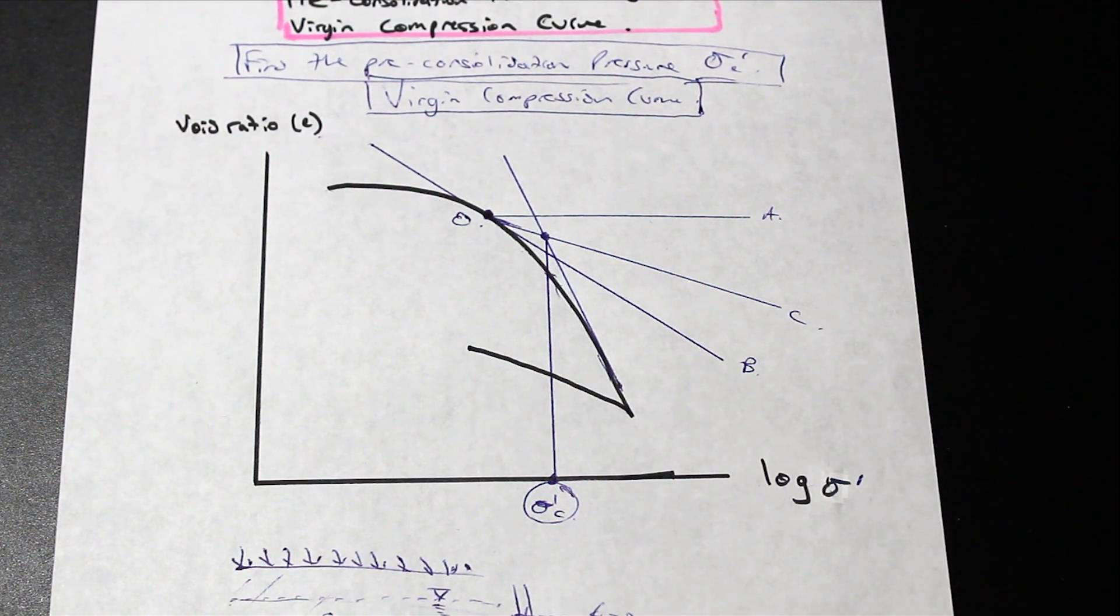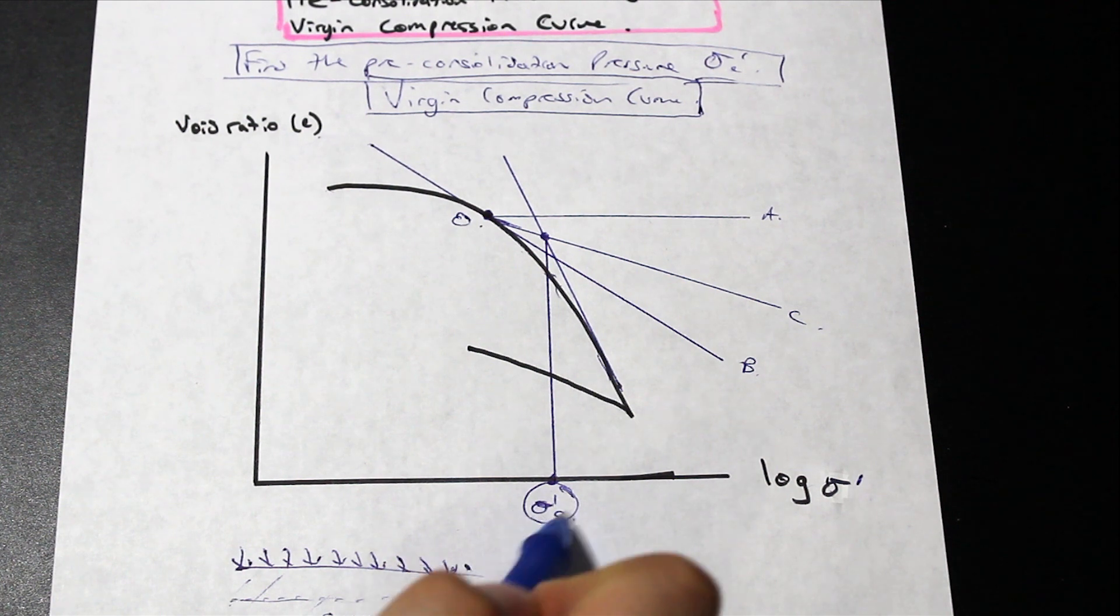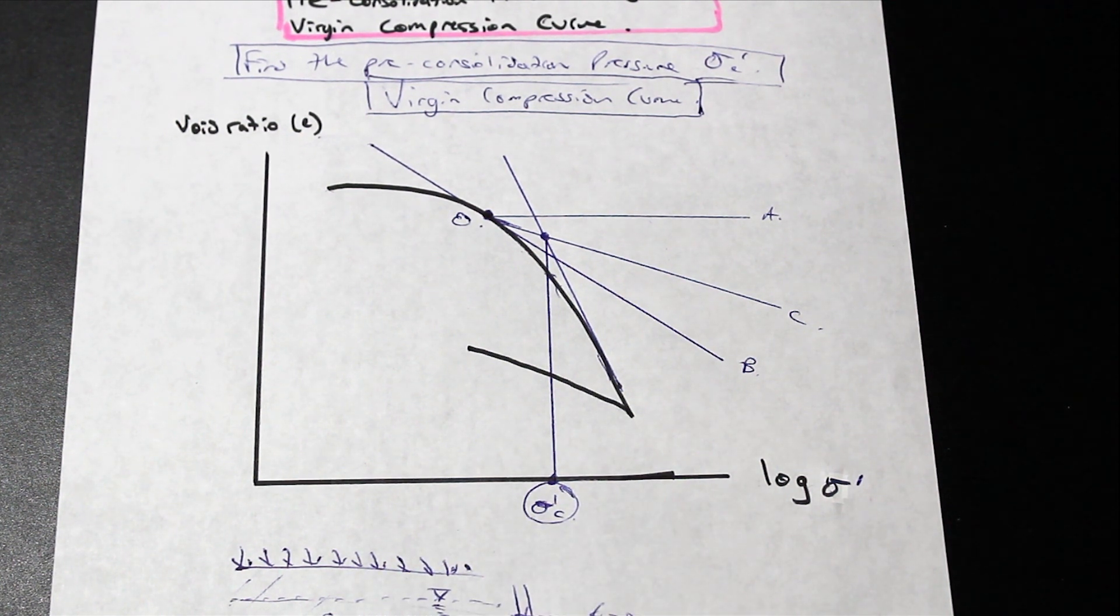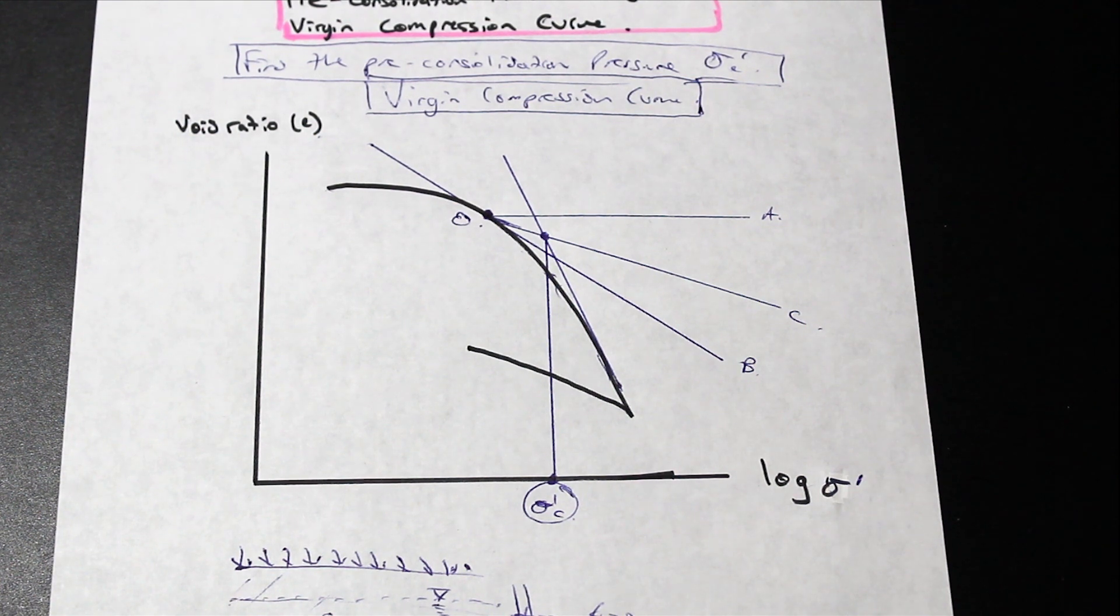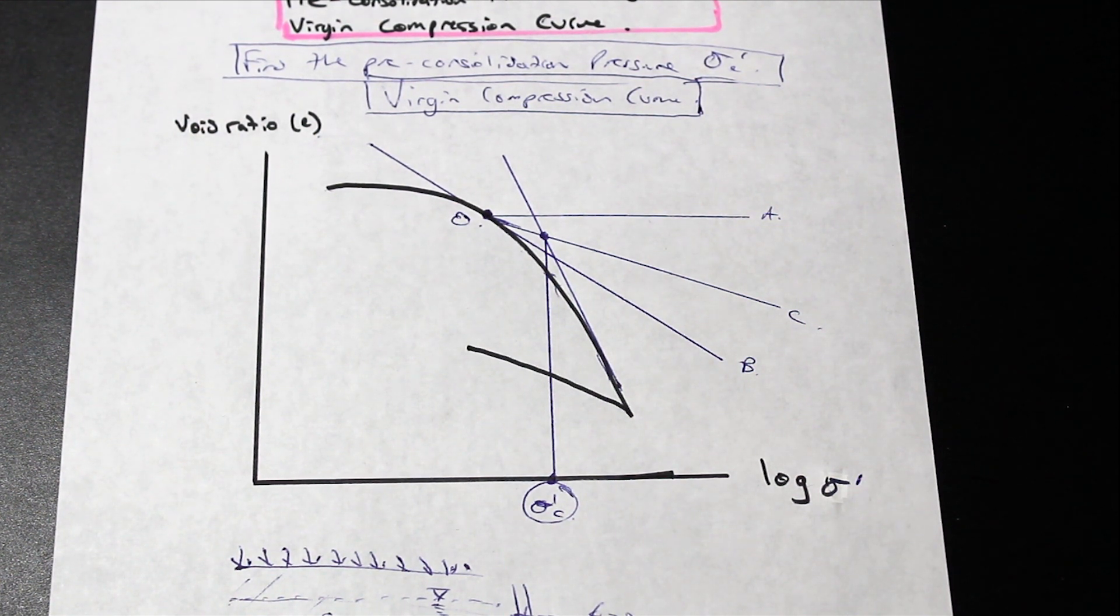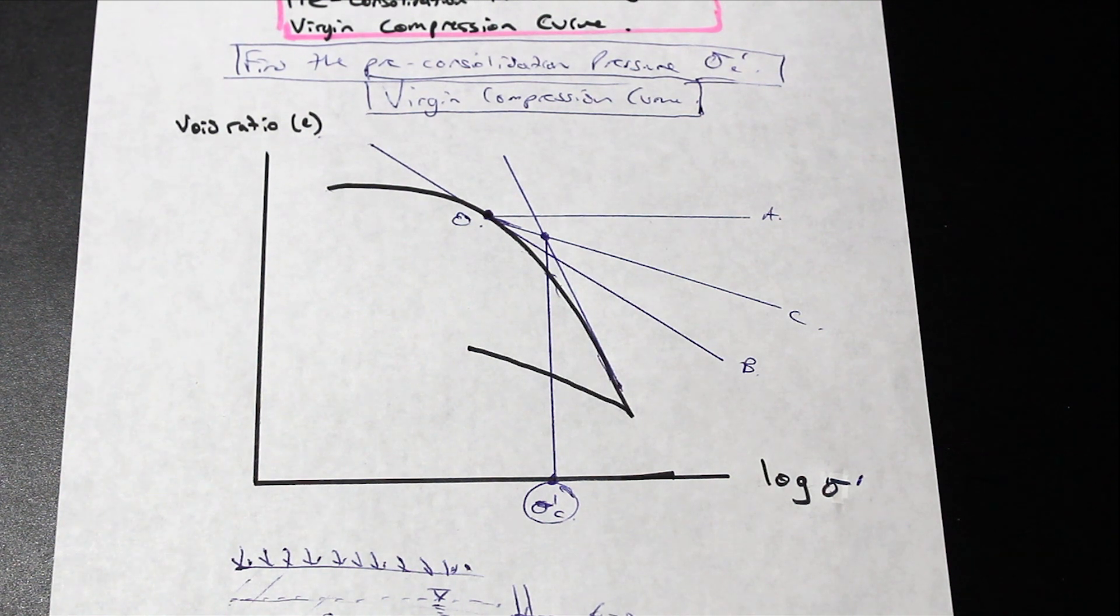One thing to note is actually the value of this. We can determine whether or not the soil is normally consolidated or over-consolidated or pre-consolidated. So that's for another video though. That's how to find the pre-consolidation pressure using the virgin compression curve. I hope I explained the consolidation decently at least. And as always, like and subscribe if you enjoyed the video.